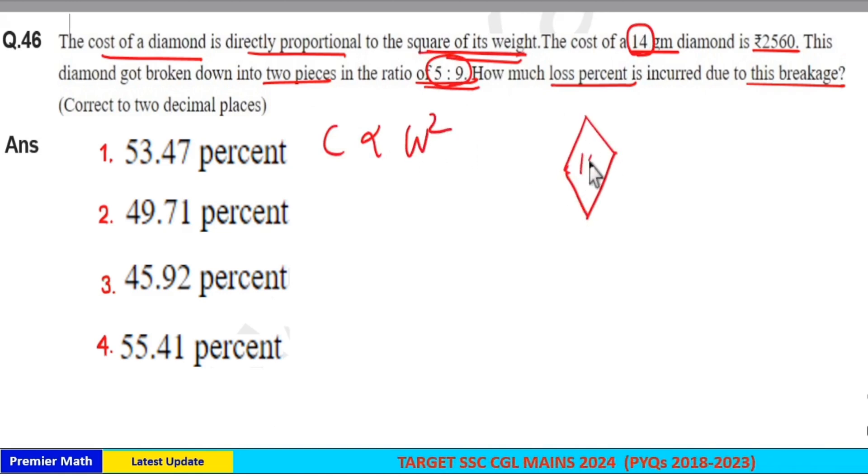Finally it is broken down into two pieces - one weighs 5 grams, the other weighs 9 grams. So initial cost is directly proportional to square of its weight, which means it is directly proportional to 14 square. Final cost is directly proportional to sum of 5 square and 9 square.